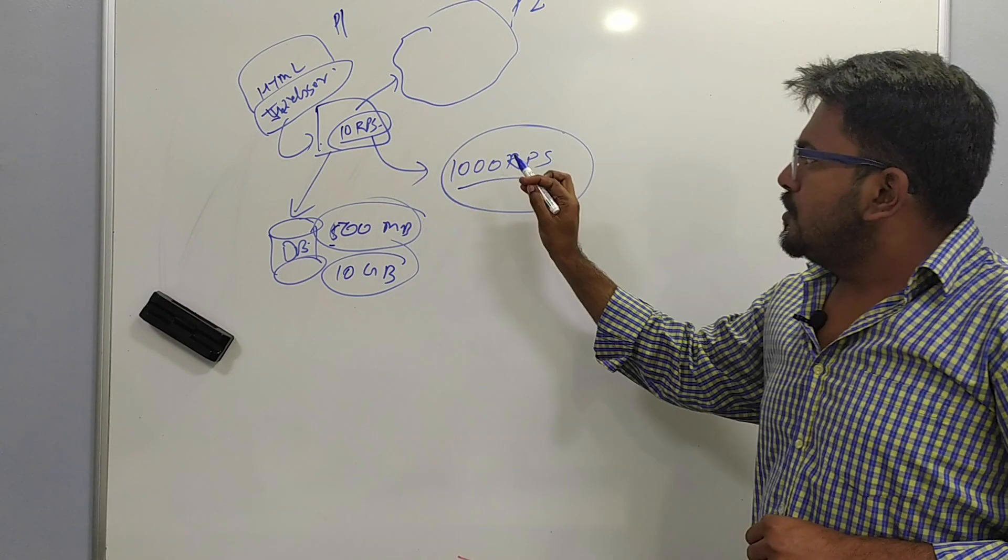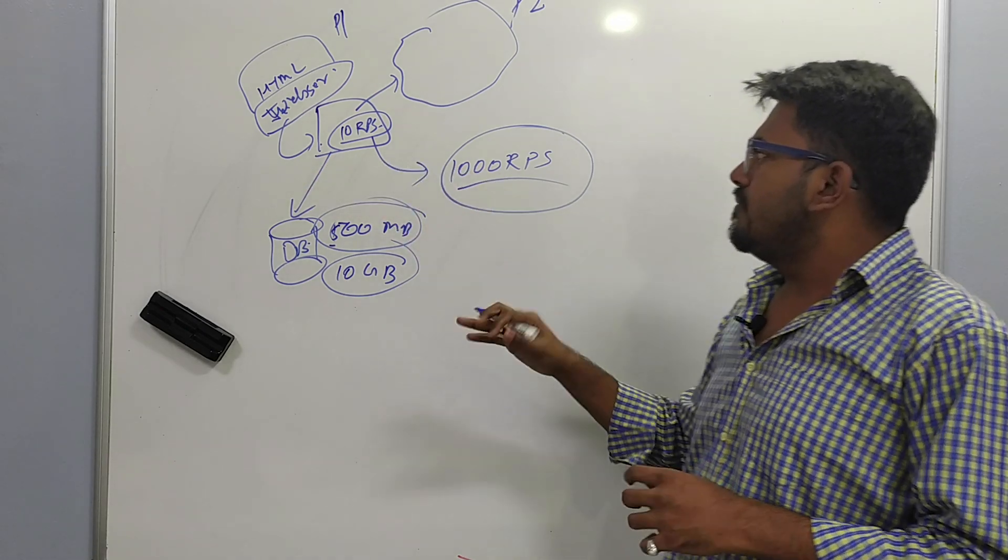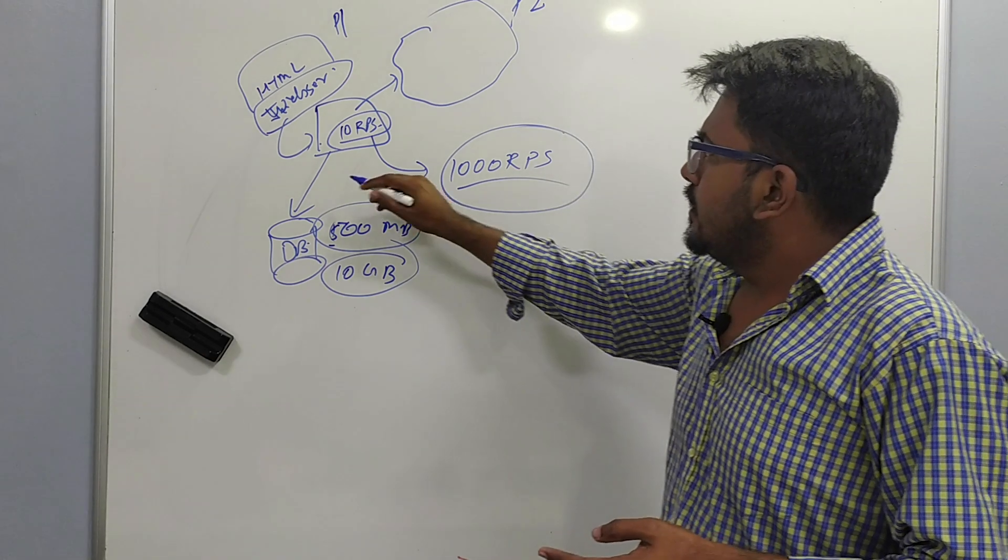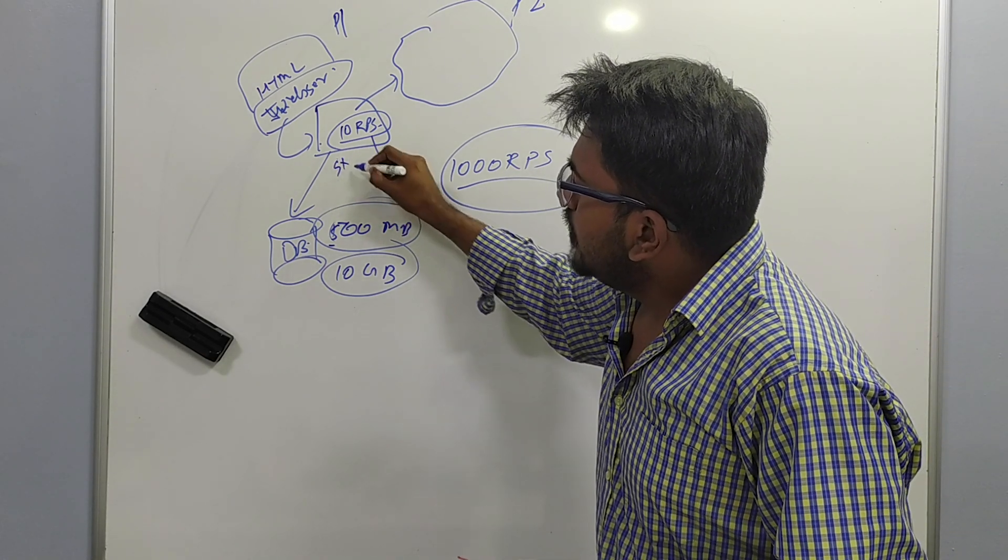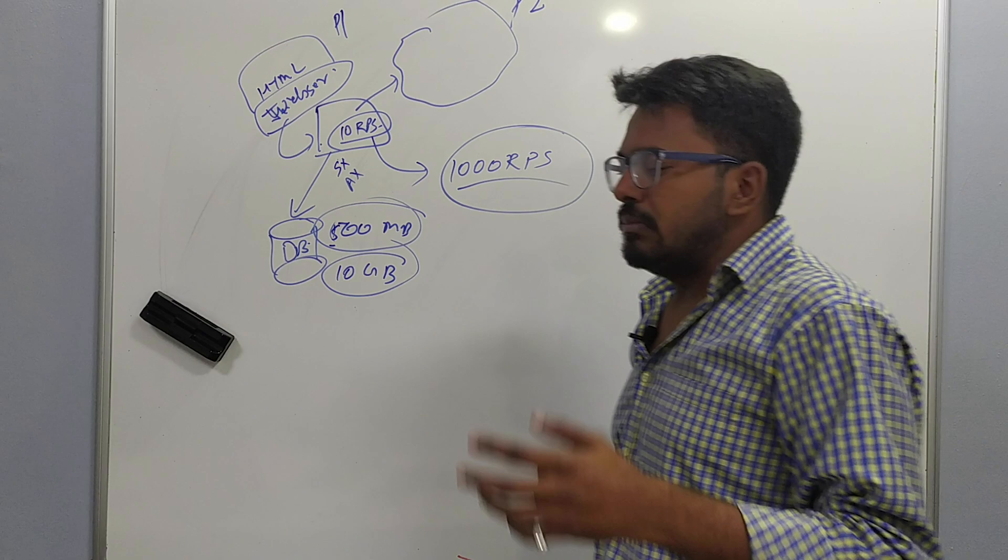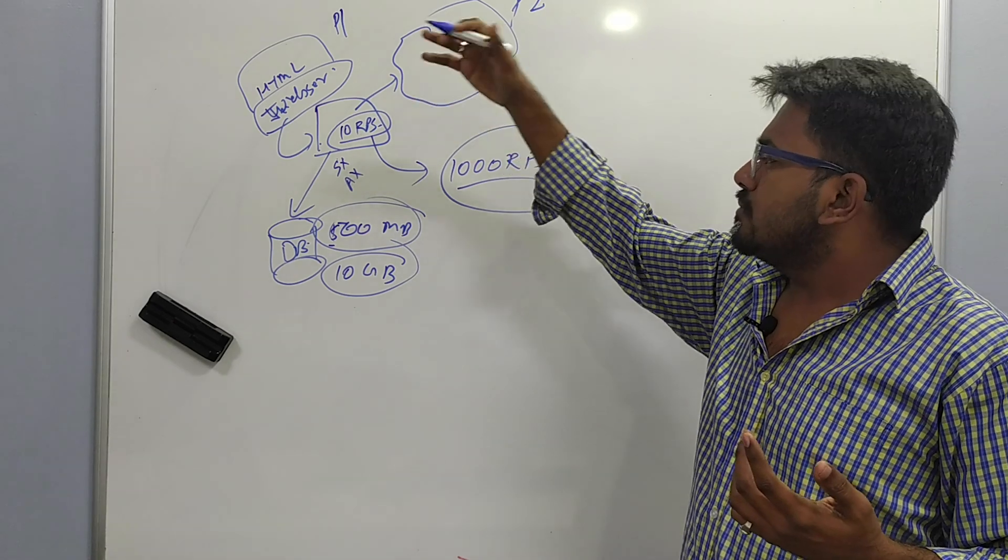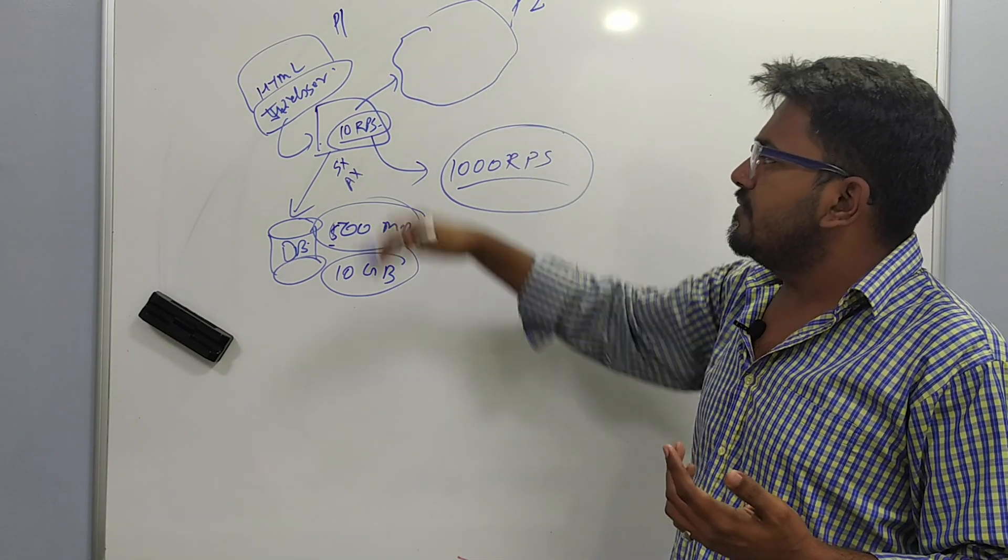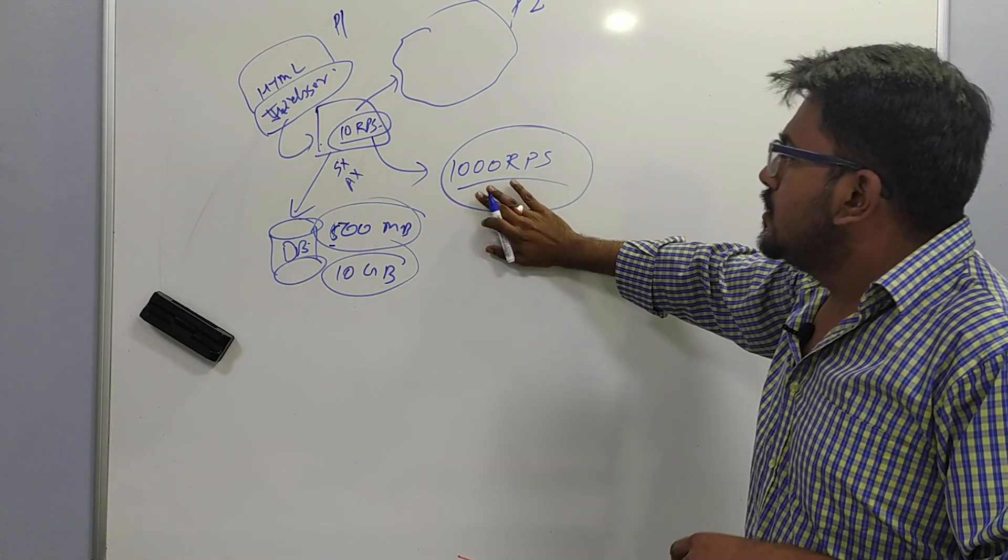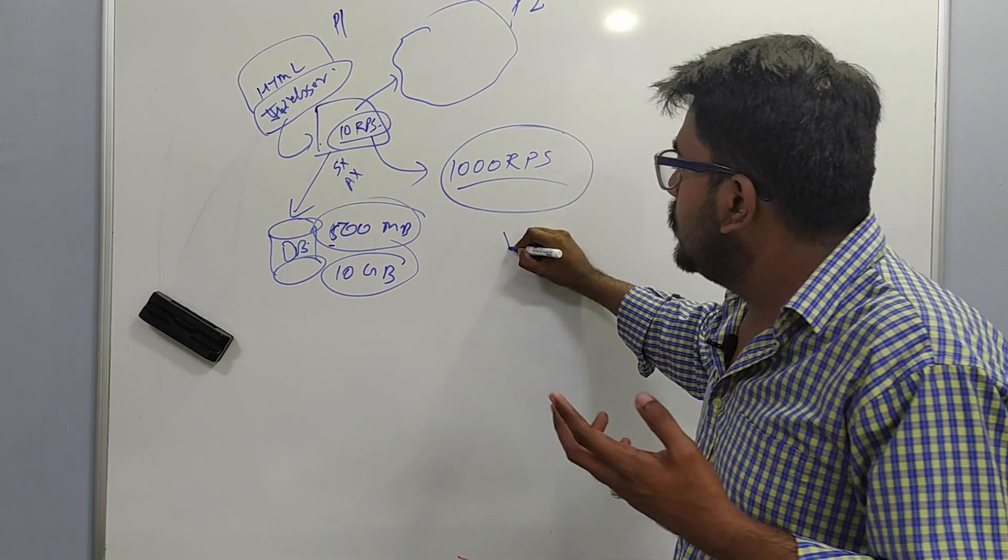When the load increased from 10 RPS to 1000 RPS, there was another problem which came, which was called availability. Scalability was still not a problem because 1000 RPS was working fine and a single box was able to handle it. We were not caring about availability because those were the early days, and if the system is not available we were good with it because we can take the system offline, fix it, and put it online again and inform the users. But when the system grew to 1000 RPS, the expectations of people also increased.